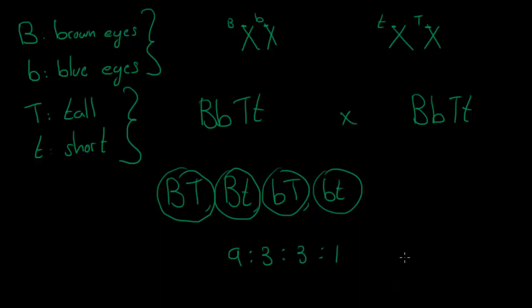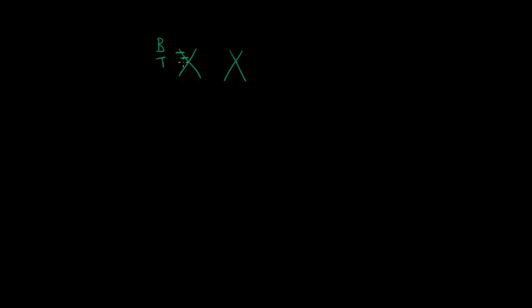This is what we have learned so far. Now what happens when these two traits are found on the same chromosome? If we draw the chromosome pair, both the B and the T alleles are on the same chromosome. When two characteristics are on the same chromosome, they are said to be linked. That is why it is called autosomal linkage — they are found on autosomes, and they are linked because both characteristics are on the same chromosome.